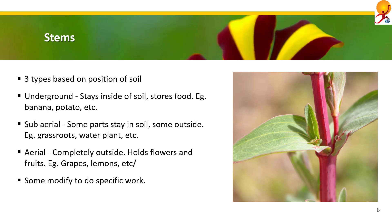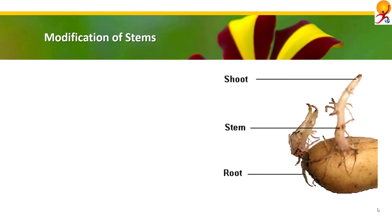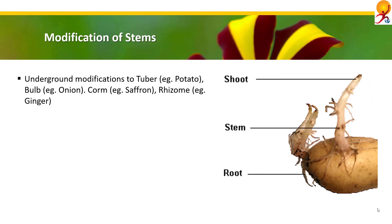Sometimes, to perform specific functions, stems modify and these changed stems are called modifications of stems. In modification of stems there are usually three types. One is underground modification: in diverse conditions underground stems store food inside the stems and become thickened and tuberous. Types include tuber, which is a rounded swelling — example potato; bulb, where leaves modify to scales and become fleshy and store foods — example onion, garlic, tulips, lilies; corm, which is a mix of bulb and tuber — example crocus, saffron, gladiolus; and rhizome, which sends out roots and shoots from its nodes — example ginger, turmeric, arrowroot.